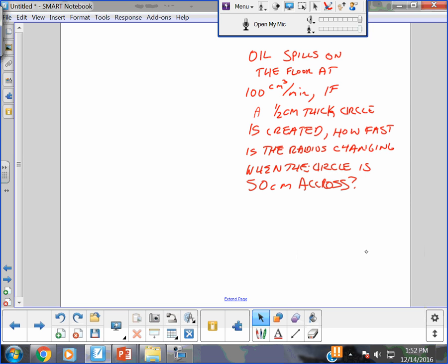So, we have a related rate. Oil spills on the floor at 100 cubic centimeters per minute. If a half centimeter thick circle is created, how fast is the radius changing when the circle is 50 centimeters across?